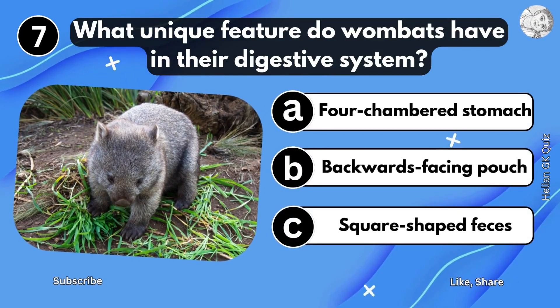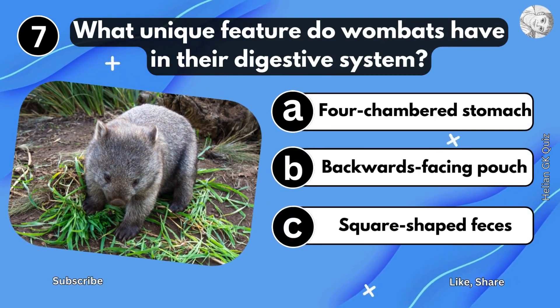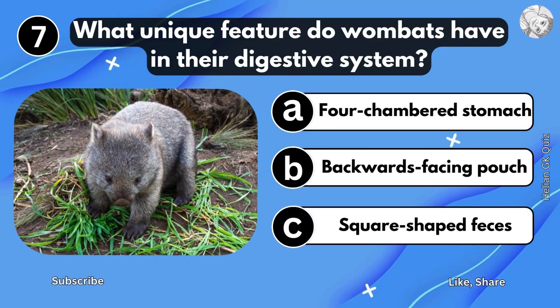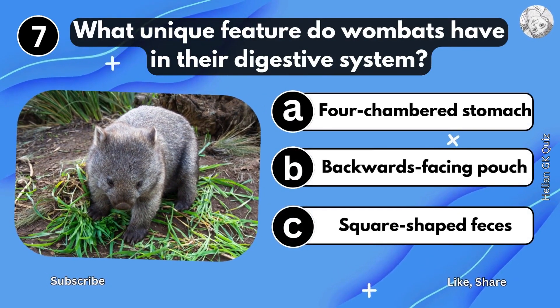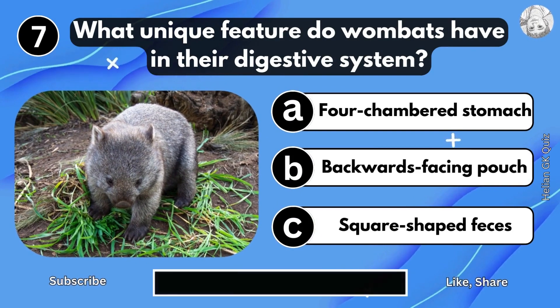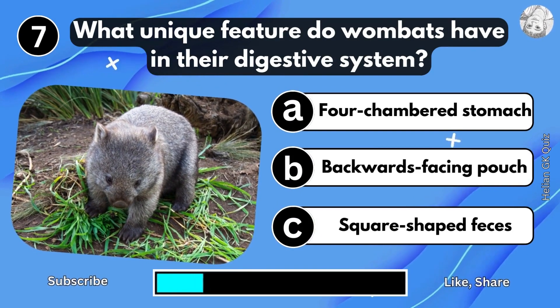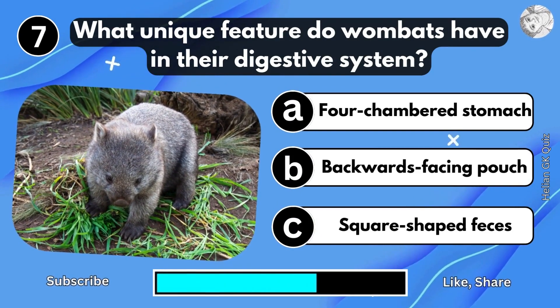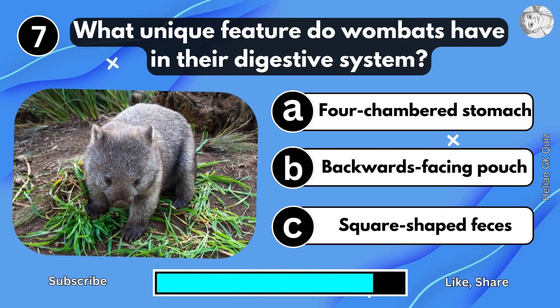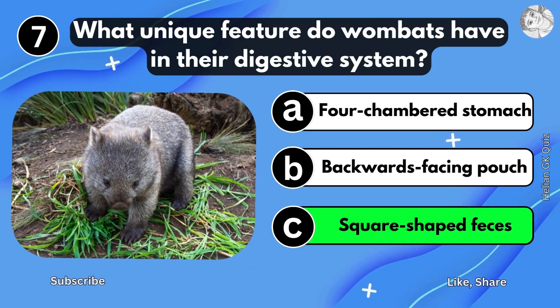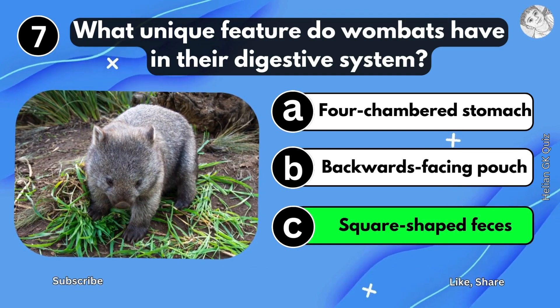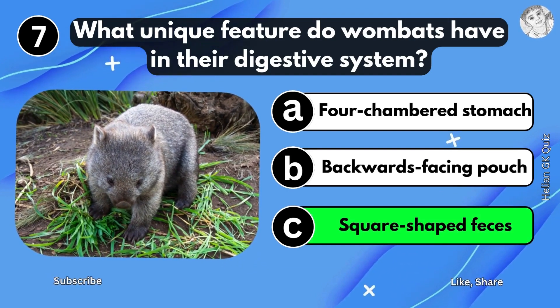What unique features do Wombats have in their digestive system? Cube-shaped feces.